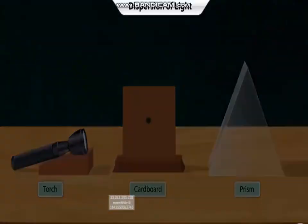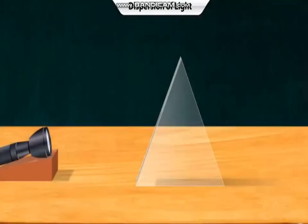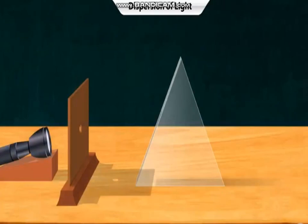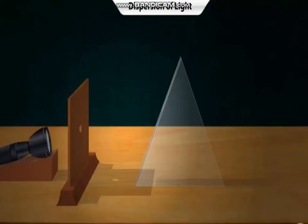In a closed room, place the cardboard between the torch and the prism on a table. Draw the curtains and switch off the lights to darken the room. Switch on the torch. A narrow beam of light passes through the hole and falls on the glass prism.